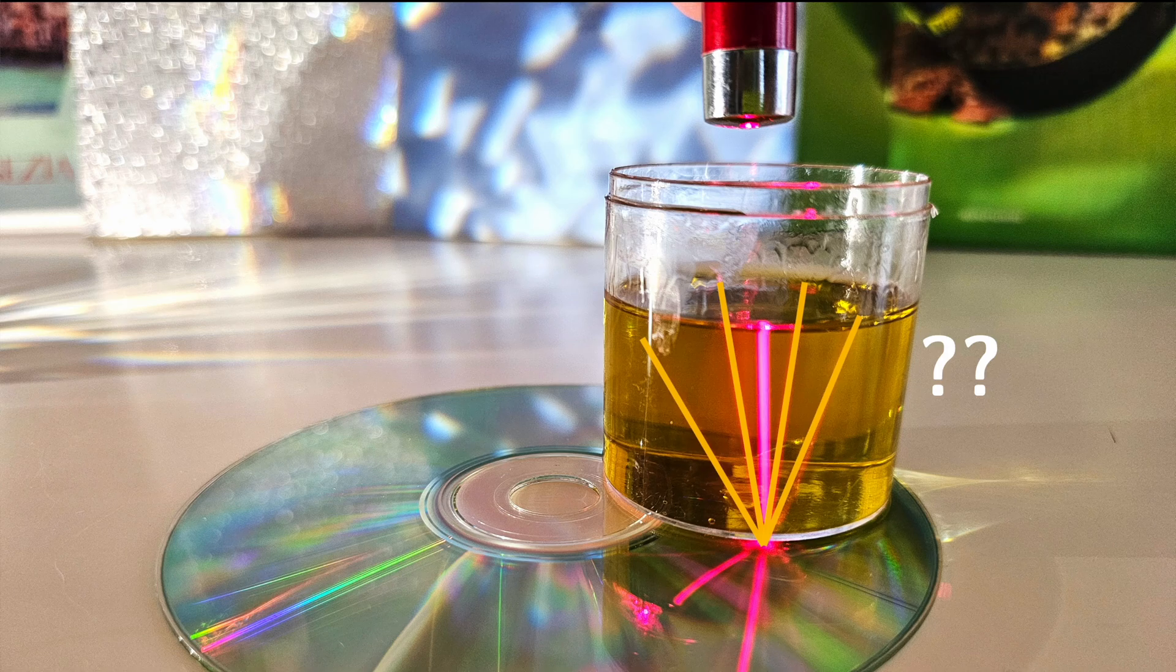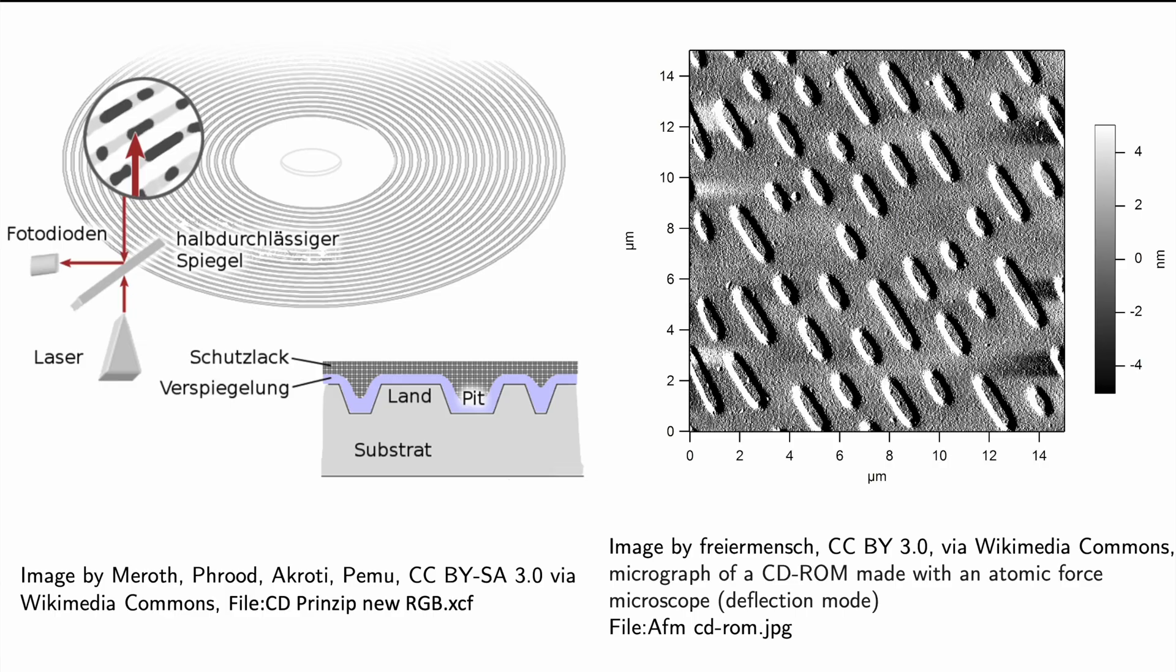But first let's take a closer look at the CD itself. Under a microscope a blank CD looks like a series of equally spaced tracks. But a CD that has data on it looks like the one on the right. But it doesn't matter now. The distance between the tracks is about 1600 nm.